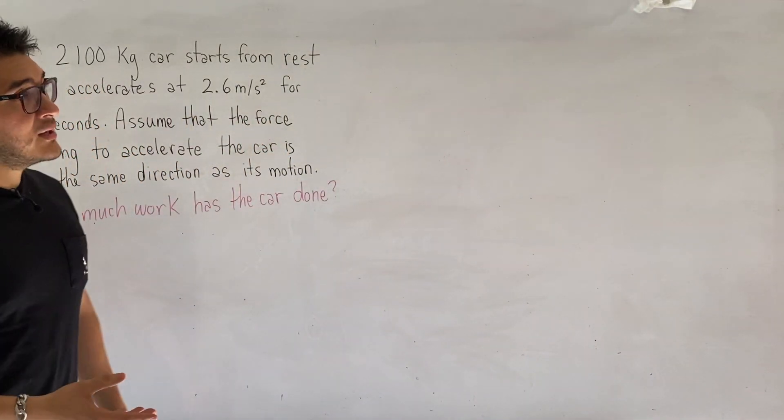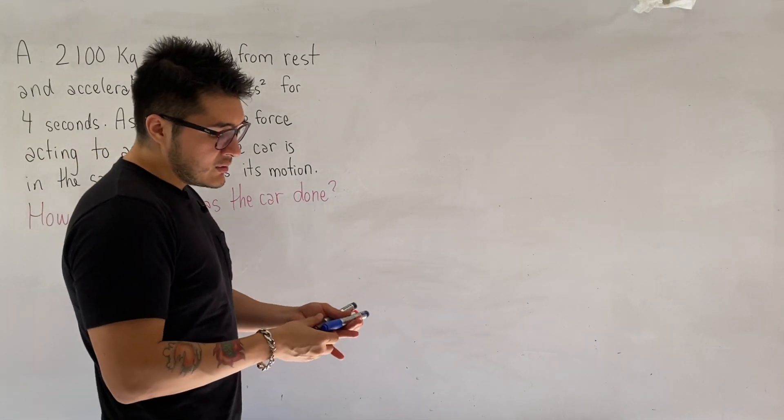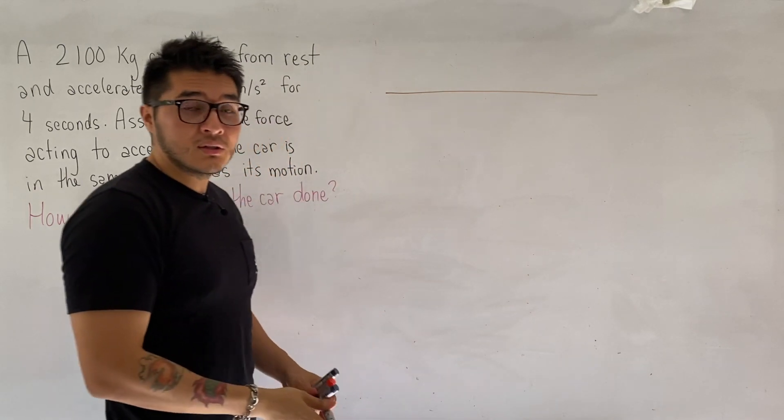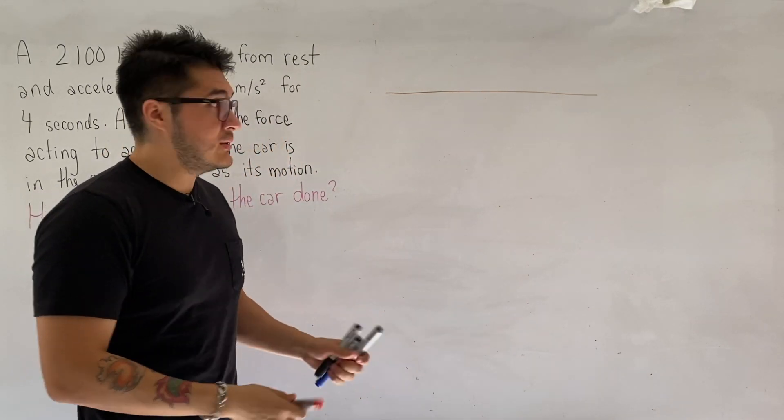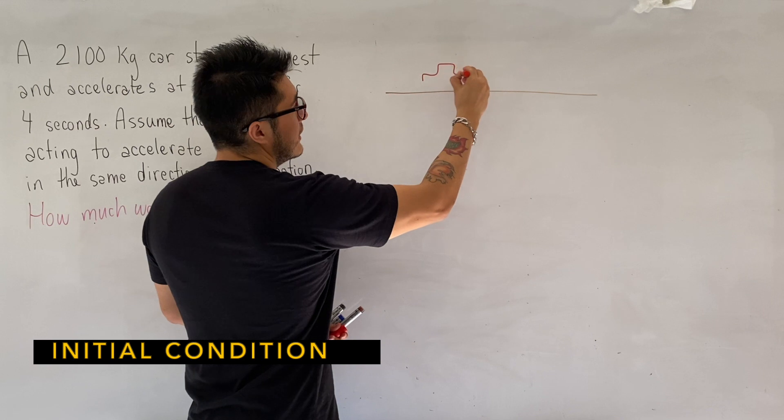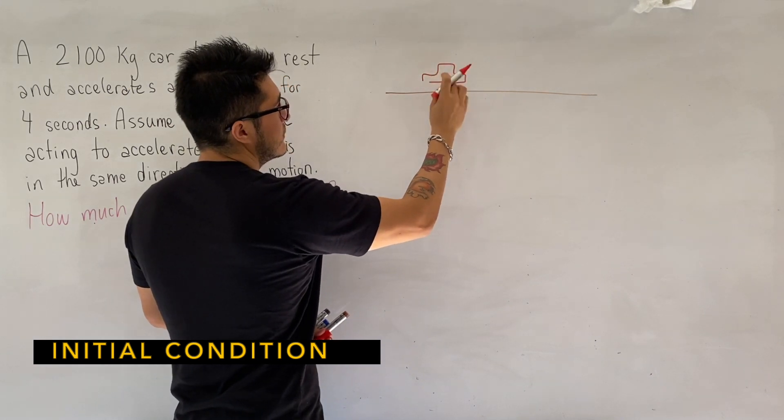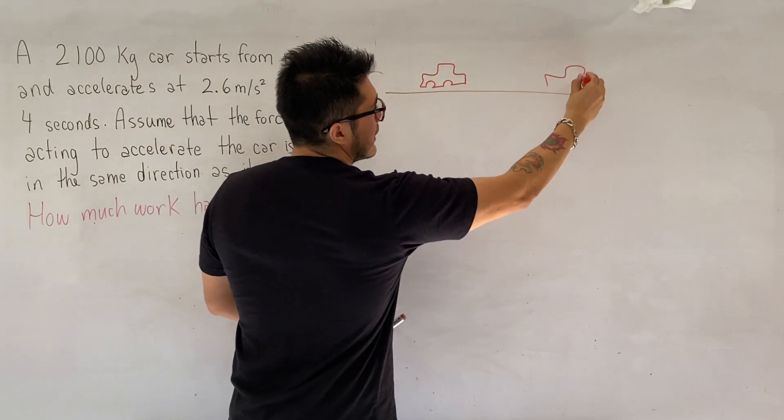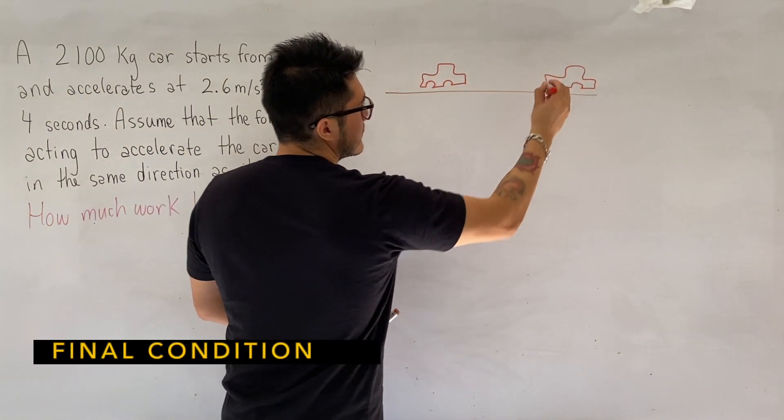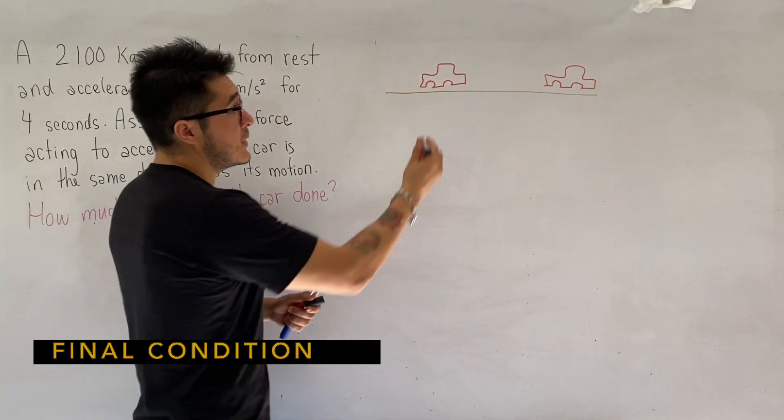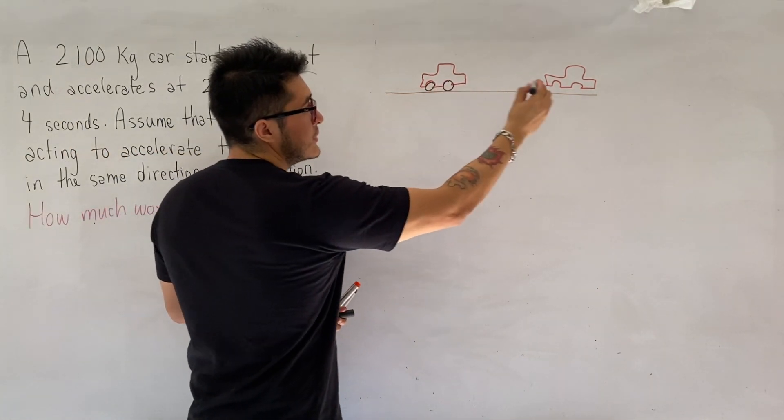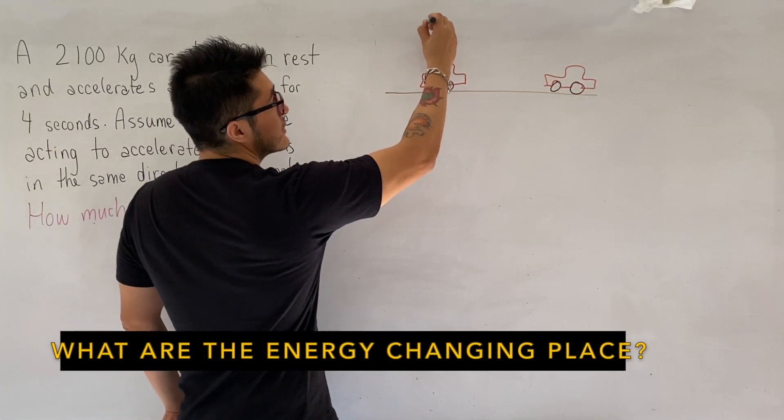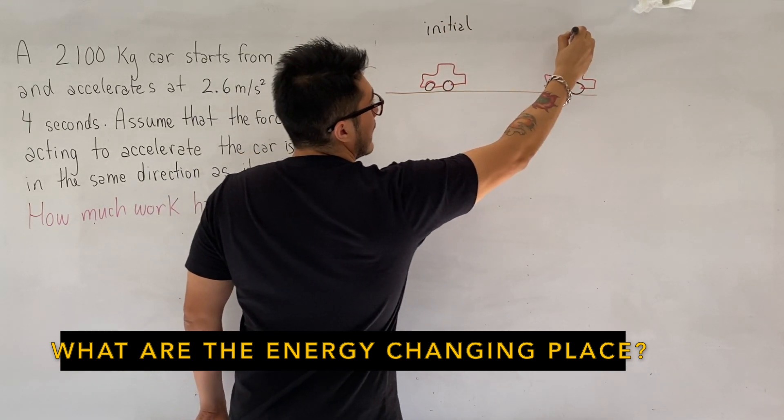So with these kind of questions, like I mentioned before, a good strategy is to always draw your situation, but always need to identify the initial conditions and your final conditions. So you want to draw the car initially. Let me draw that better. And you want to draw your car at its final conditions. All right, so that's a good strategy with the energy unit, because you're always looking at what are the energy changes taking place.